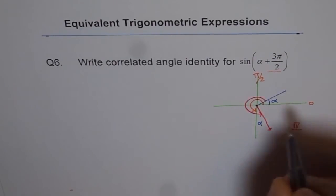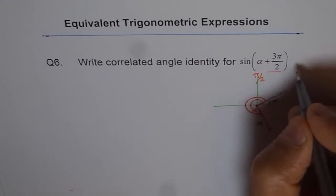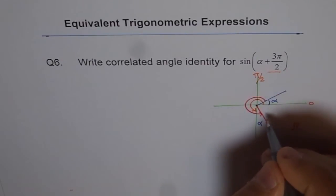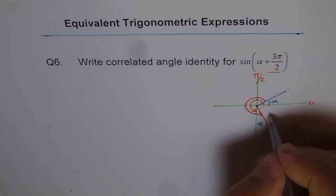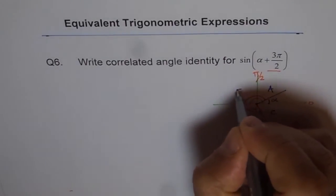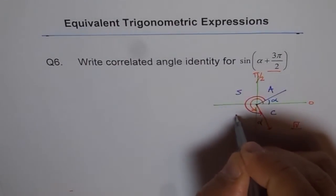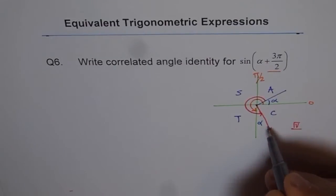In quadrant 4, sine is negative. So we are talking about sine, and we are expecting a negative result. Let me write down the CAST rule so that you get an idea of what we are talking about. So C, A, S, T — here cosine is positive, all others are negative, for the primary trigonometric ratios.